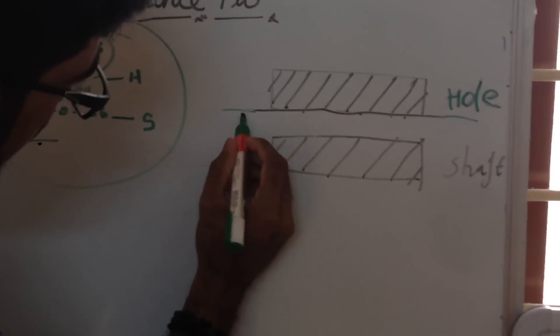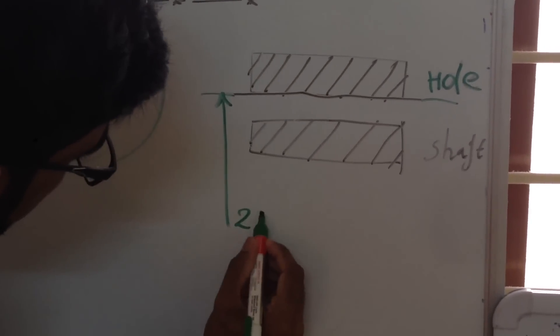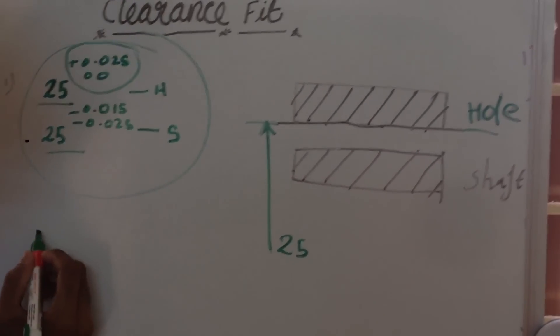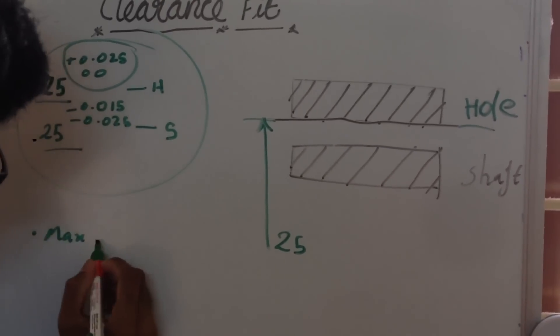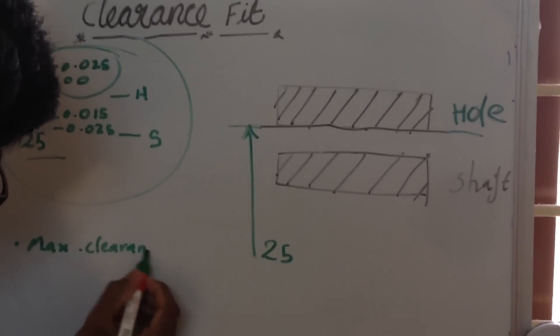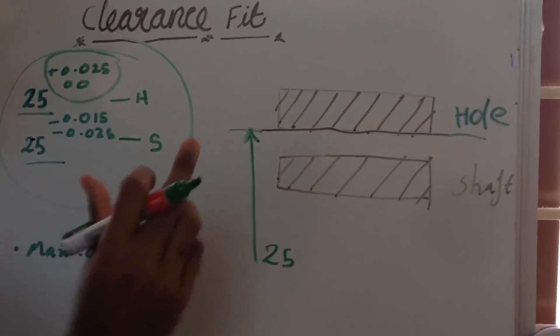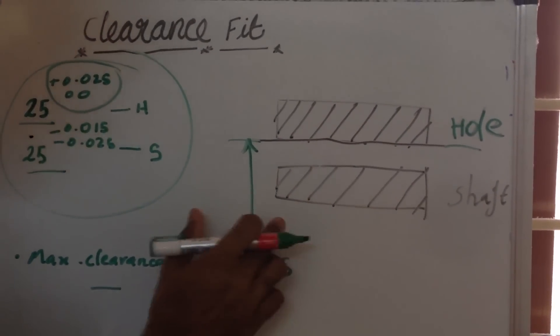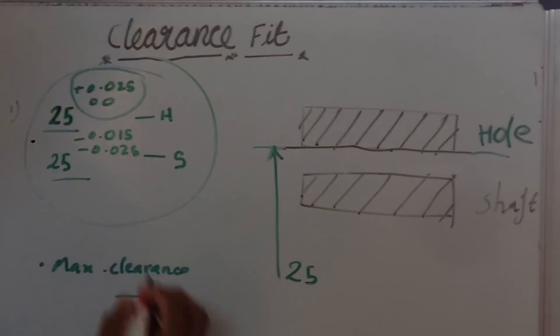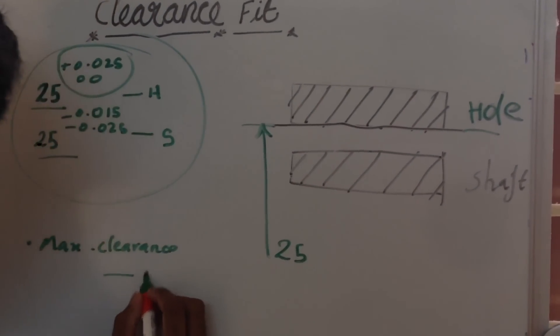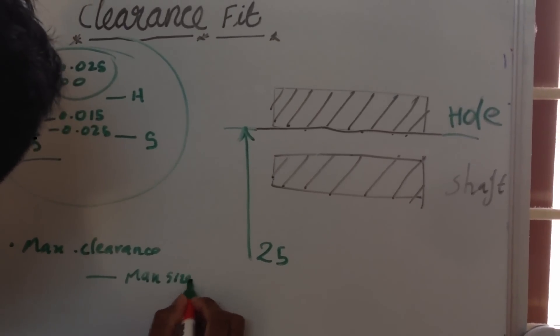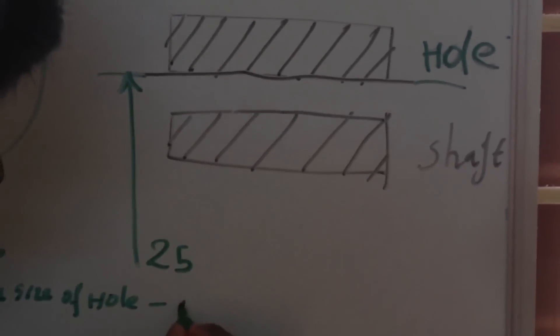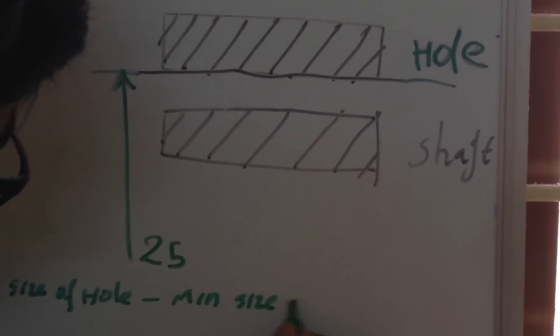This is the maximum diameter, that is 25 here. For finding maximum clearance, maximum clearance will always be the maximum limit of hole minus minimum limit of shaft. We can represent as maximum size of hole minus minimum size of shaft.